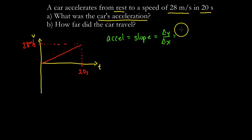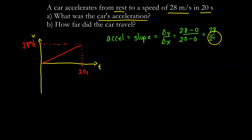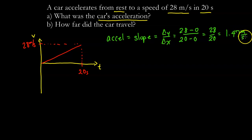The change in y is from 0 to 28, so that's 28 meters per second minus 0. The change in x is from 0 to 20 seconds, so it's 20 seconds minus 0. We take 28 divided by 20 and we get 1.4 meters per second squared — that's our acceleration.